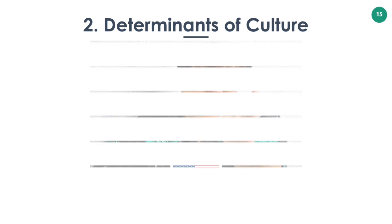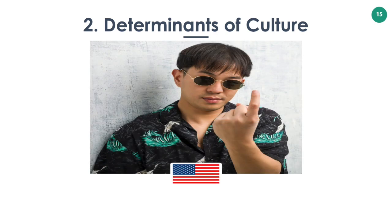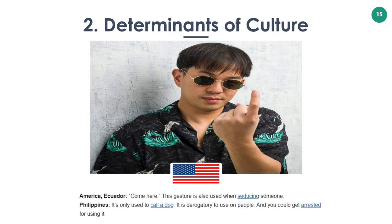The last example is the 'come here' gesture. In America, Ecuador, or even Malaysia, this is a normal 'come here' gesture and is also used when seducing someone. But in the Philippines, it is only used to call a dog. So it is considered derogatory to use on people and you could get arrested for using it. Bear in mind not to use this gesture in the Philippines.